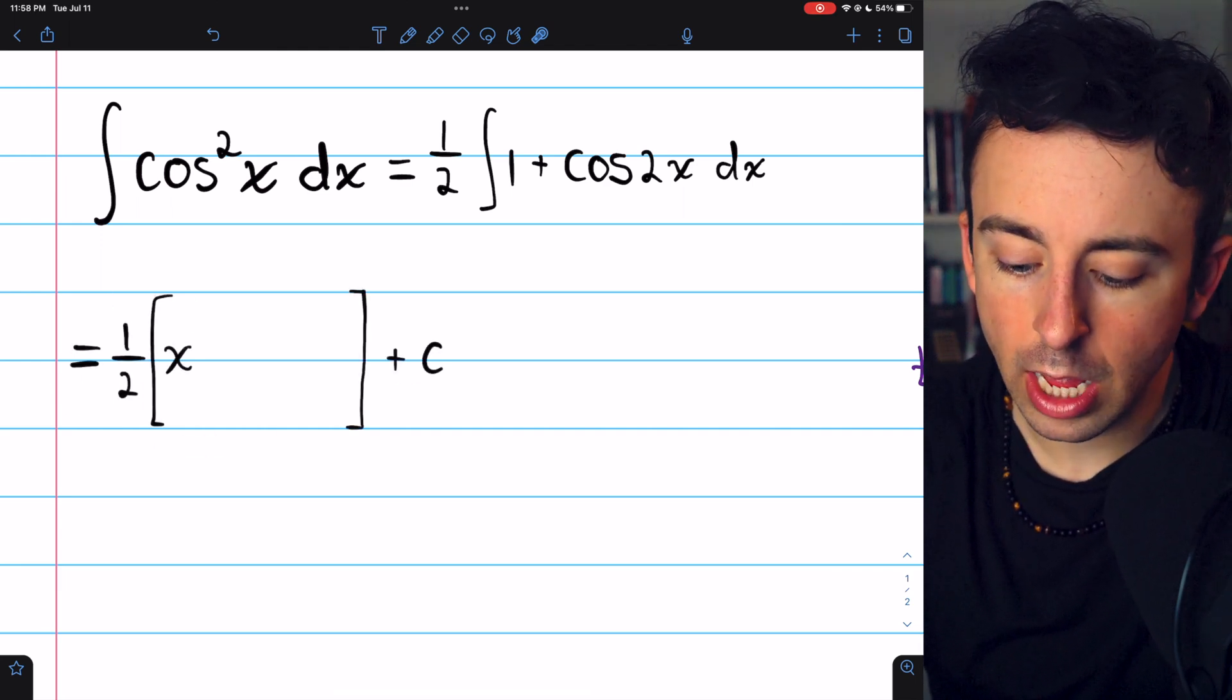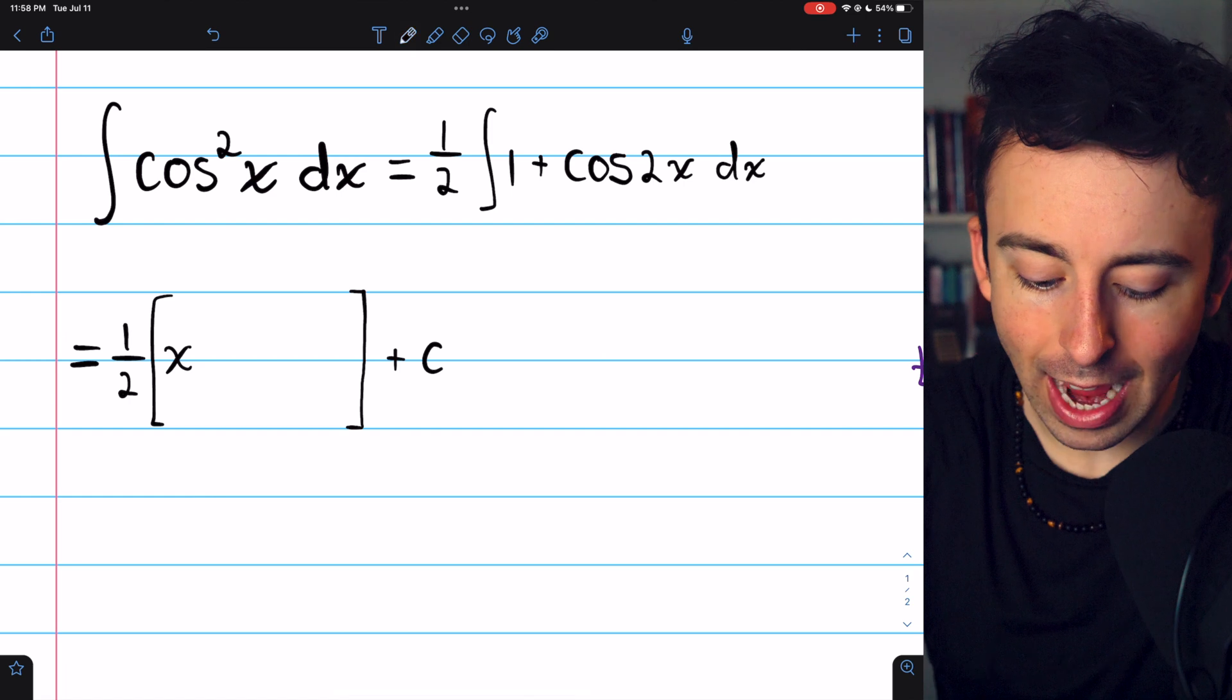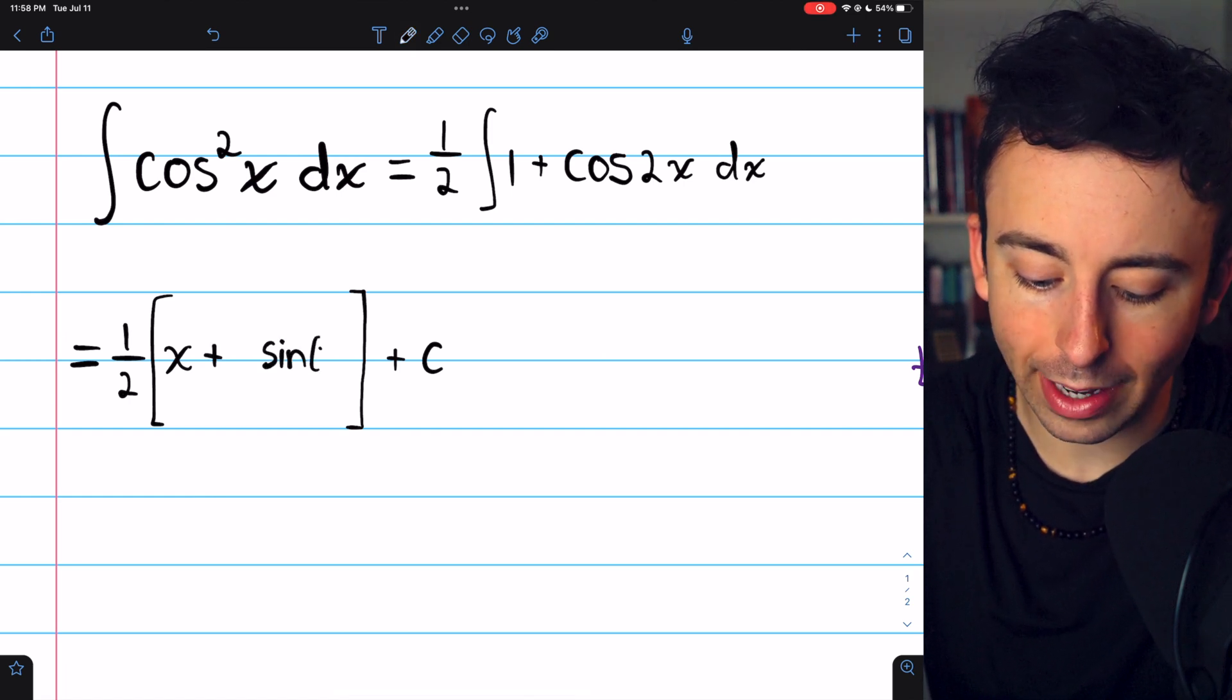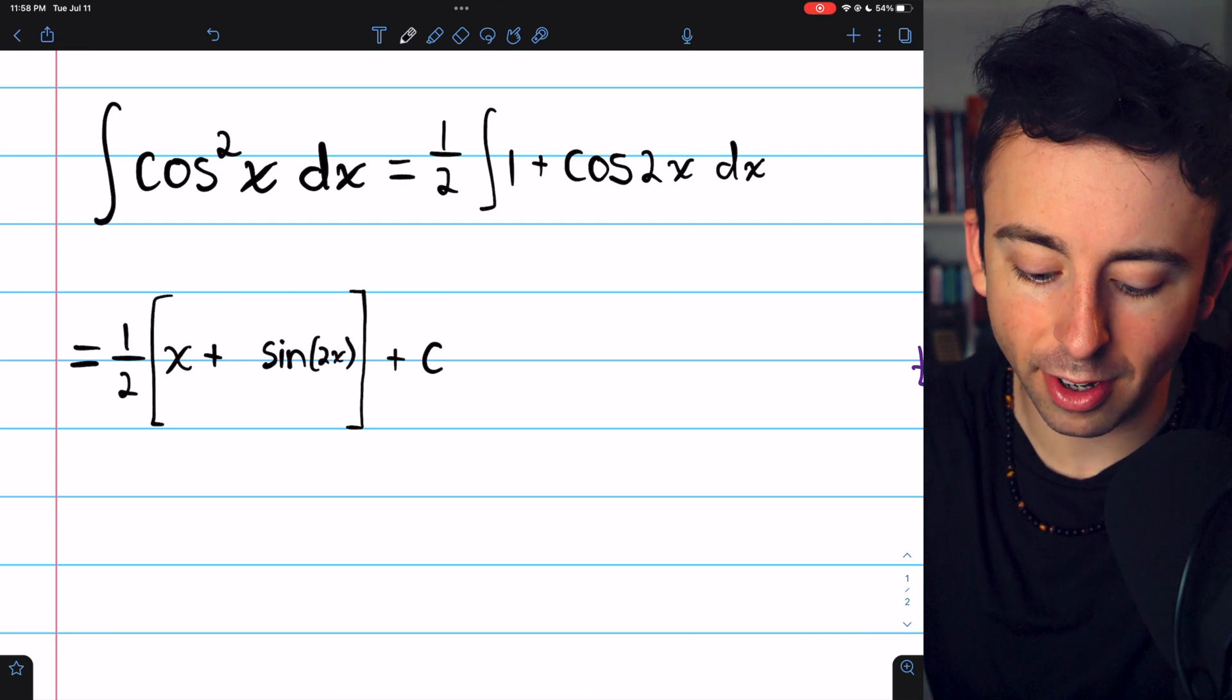So here's the integral. We have that factor of 1 half out front. 1 integrates to x, and the integral of cosine of 2x is sine of 2x because the derivative of sine is cosine.